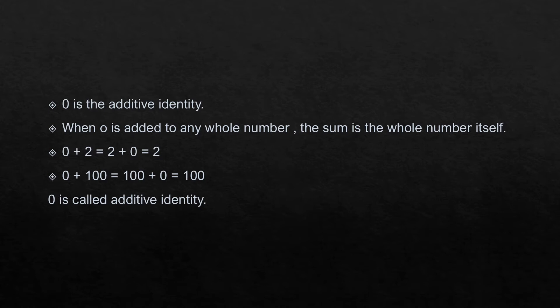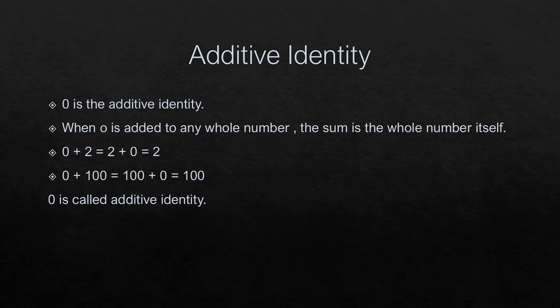What is additive identity? Zero is the additive identity. When 0 is added to any whole number, the sum is the whole number itself. For example, 0 plus 2 equals 2 plus 0 equals 2. Similarly, 0 plus 100 equals 100 and 100 plus 0 is always 100. So 0 is called the additive identity.